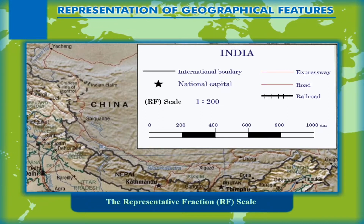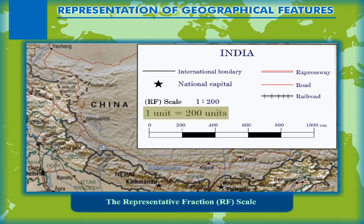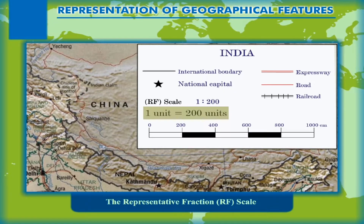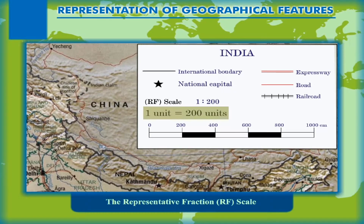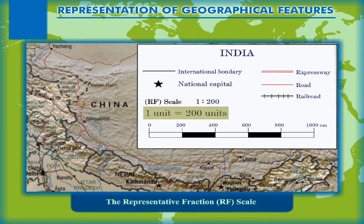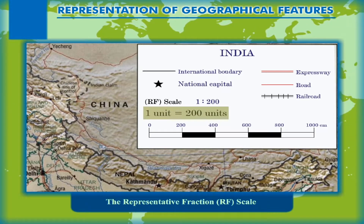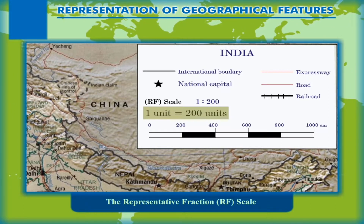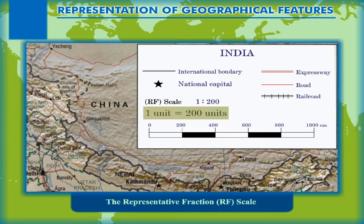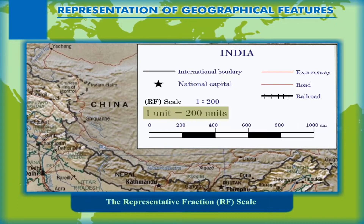Any suitable unit can be placed on both sides and used to calculate the distance on the map. The RF simply states that one unit is equal to 200 units, and the unit may be any unit. The numerator, or the value of the distance on the map, is always one.